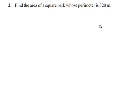Coming to the second problem, he asked us to find what's the area of a square park whose perimeter is 320 meters. He has given a square park whose perimeter is 320 meters.